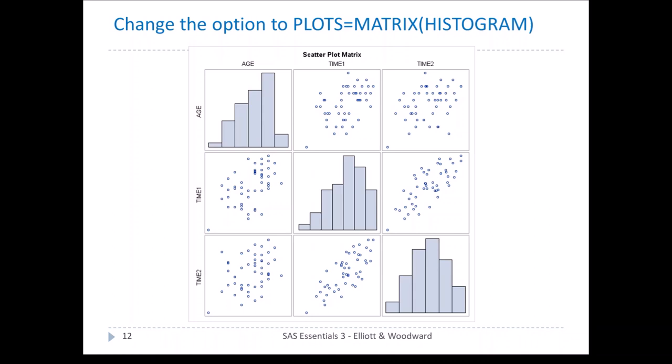We can also change the option to PLOTS=MATRIX(HISTOGRAM), which includes a histogram on the diagonals — one for each variable. This is helpful for assessing normality or identifying outliers. For example, looking at age by time1, there's a lone dot at the bottom left, and the histogram of time1 shows that value as a small bar on the far left, with most data to the right, suggesting time1 is somewhat right-skewed.